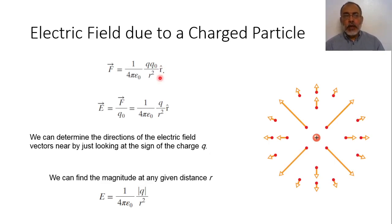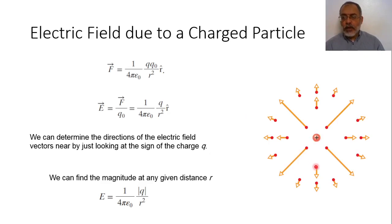Assuming that Q is a charge for which we want to find the electric field, and Q naught is a test charge. So assuming I have a charge Q and a test charge Q naught at a distance R, the force at this point due to the presence of Q naught would be 1 over 4π epsilon times Q multiplied by Q naught over R squared, in the R direction.